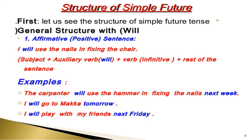We can use 'shall' for the first person — that is 'I' and 'we.' For example, 'I shall go to Makkah tomorrow' and 'I shall play with my friends next Friday.' For second person and third person, we must use 'will' only. We have now learnt simple present, simple past, and simple future.